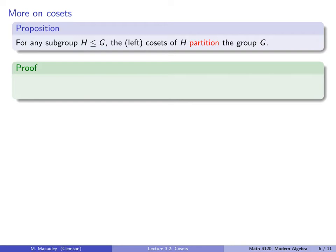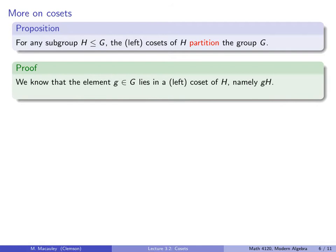For any subgroup H of G, the left cosets of H partition the group G. The cosets cover the group — everything is in some left coset — and the cosets are disjoint. Formally: any element g lies in the coset gH. Uniqueness follows because if g is in some other coset, then by the previous result, that must be the same coset. So there's no way g can be in two different cosets.